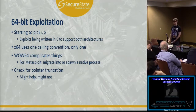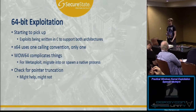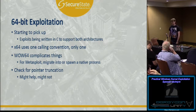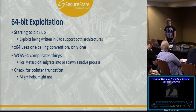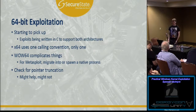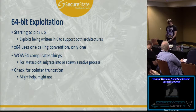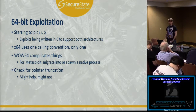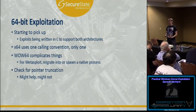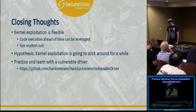64-bit exploitation is starting to pick up — the latest Windows local privilege escalation added to Metasploit was targeting Windows 8.1 as a 64-bit exploit. One nice thing is that 64-bit uses one calling convention, whereas 32-bit Windows had stdcall, cdecl, and fastcall. WOW64 complicates a lot of things, specifically resolving addresses, because the kernel executable is a 64-bit executable you can't load into a 32-bit process. If you're looking at a vulnerability and it doesn't work, check for pointer truncation — as in the MS14-58 case, the truncated value might offer a viable exploitation path on 64-bit.